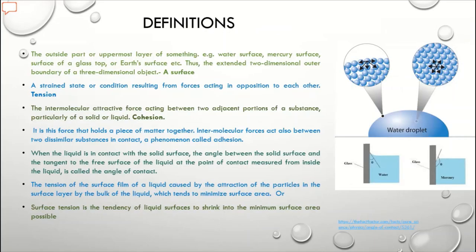Before going to the definition of surface tension directly, we must see some definitions which are needed to define the surface tension. So first definition comes - the surface. What do you mean by surface? The outermost part or uppermost layer of something, that is water surface, mercury surface or some solid material surface. Or in physics or mathematics, the surface can be defined as the extended two-dimensional outer boundary of a three-dimensional object. That is nothing but the surface.